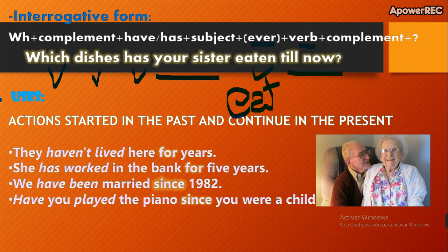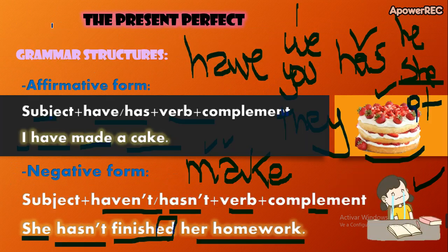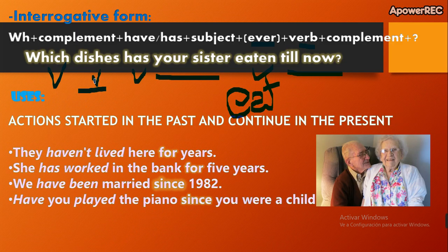This is the interrogative form. If we want to make a yes/no question, we start with have or has. For example: Have you eaten? — ¿Has comido? Yes, I have. No, I haven't. Those are the affirmative and negative short answers.